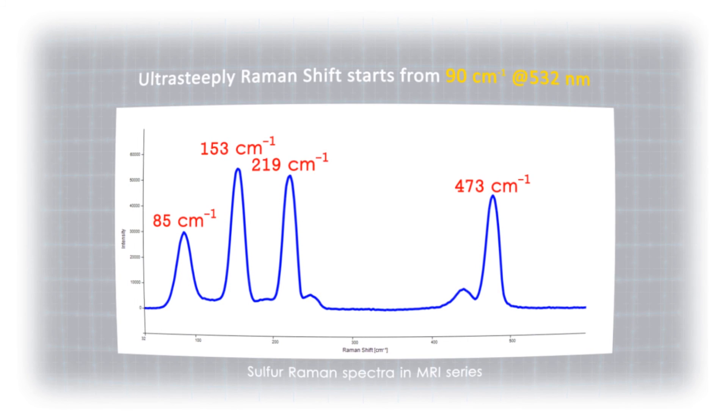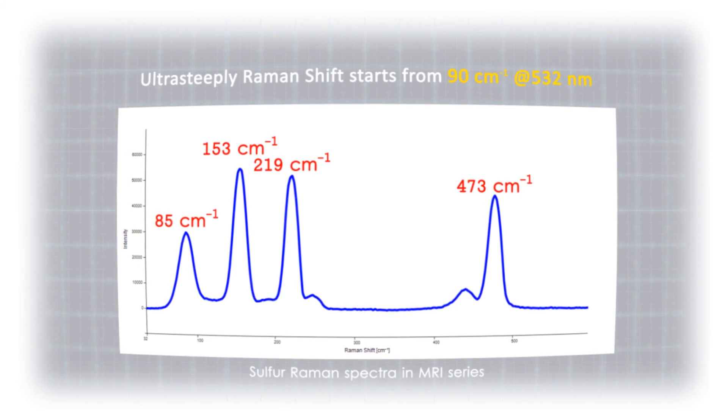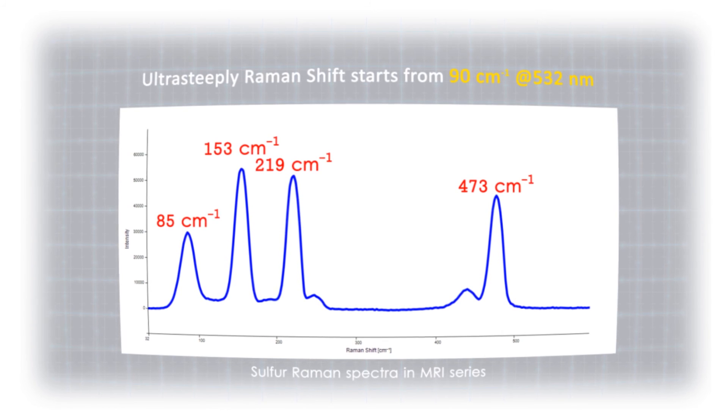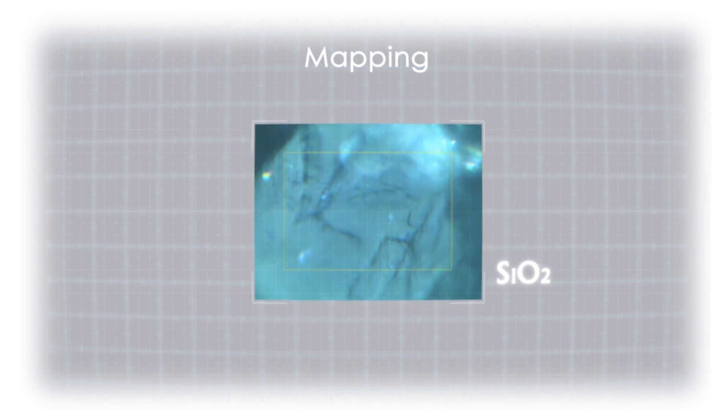ProTrust Tech assures that MRI will present you with impressive high-quality Raman microscopic performances. Take sulfur as a standard substance, MRI can identify the low Raman-shift signals measured down to 85 wave numbers.